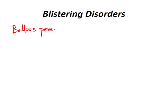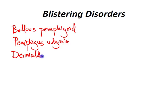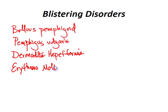Now let's talk about blistering disorders. We have bullous pemphigoid, pemphigus vulgaris, dermatitis herpetiformis, erythema multiforme, and Stevens-Johnson syndrome. Let's talk about each one of these blistering syndromes.